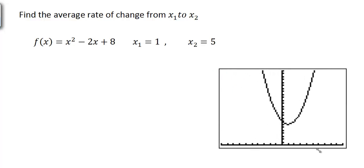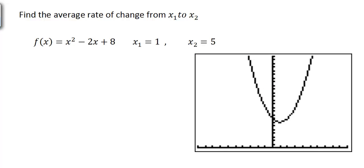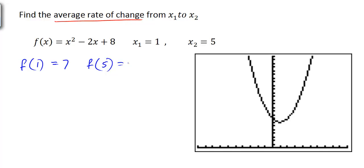Now we have basically the same problem as before, but now we're not given a straight line. We want to know the average rate of change as we go from x1 equals 1 to x2 equals 5. Plugging in f of 1: 1 squared minus 2 times 1 plus 8 gives us 7. For f of 5: 5 squared is 25, minus 10, plus 8 equals 23.